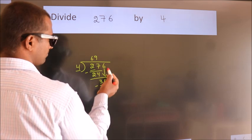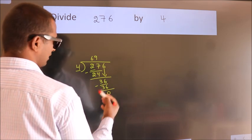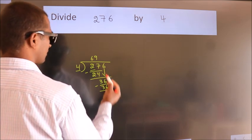After this, no more numbers to bring it down. And we got remainder 0. So this is our quotient, 69.